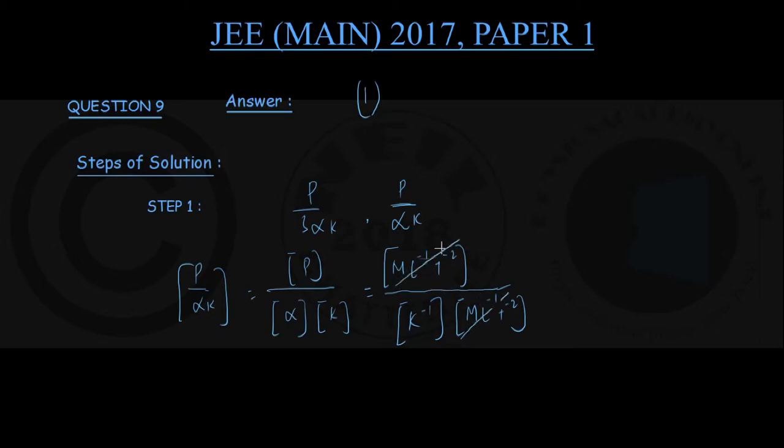You can see the dimensions of pressure and bulk modulus cancel each other out, and you have got the dimension of temperature K only here. So you understand both options 1 and 2 have the same dimension as that of temperature, and our choice should be between options 1 and 2.